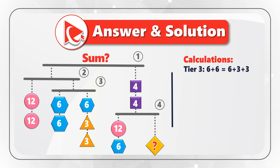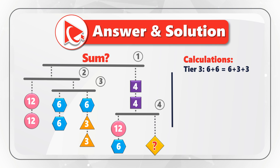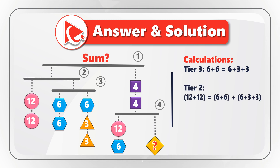On the left of Tier 3, we have two hexagons with a total value of 12. On the right of Tier 3, we have a hexagon (equals 6) plus two triangles (3 plus 3), so both sides total 12 — this is why Tier 3 remains in balance. Now looking at Tier 2: on the left we have two circles, each with value 12, totaling 24. On the right of Tier 2, we have two circles totaling 24 and the entire Tier 3, which also equals 24.